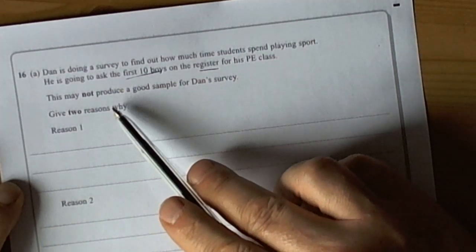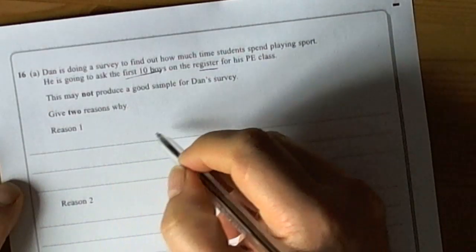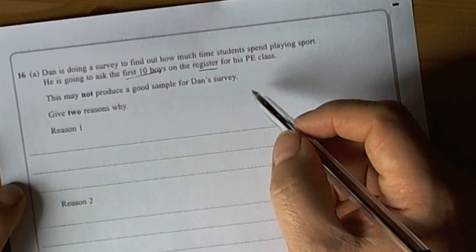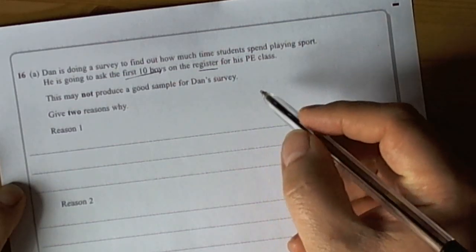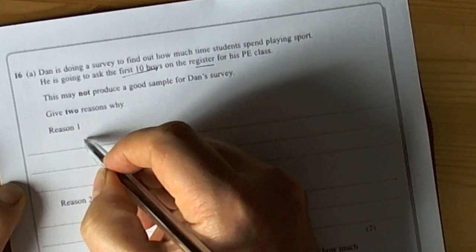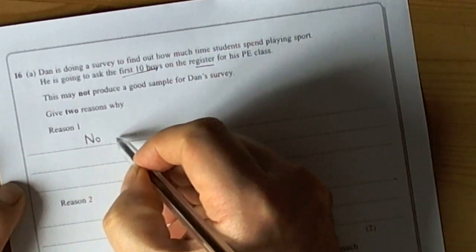So, the question says, this may not produce a good sample. Give two reasons why. Well, the first thing is that a sample has to be fair. And if you've got a gender situation, then really there ought to be boys and girls being asked. So, the first reason this one is not fair is no girls in the sample.